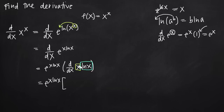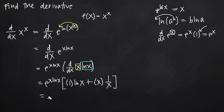Product rule tells us to take the derivative of one function and multiply by the other untouched. The derivative of x is 1, times natural log of x; then add x left alone, multiplied by the derivative of natural log of x, which is 1/x. Simplifying: 1 times natural log of x gives natural log of x, and x times 1/x gives 1, so we get natural log of x plus 1.